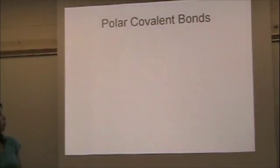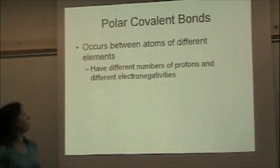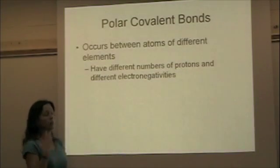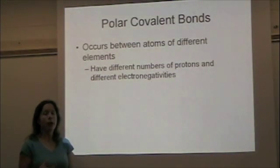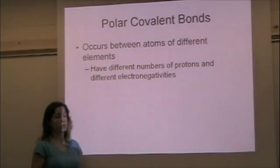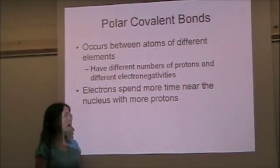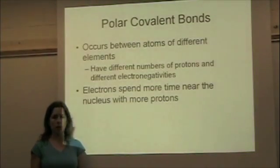These are called polar covalent bonds. These form between atoms of different elements. So they have different numbers of protons and, as a result, different electronegativities.